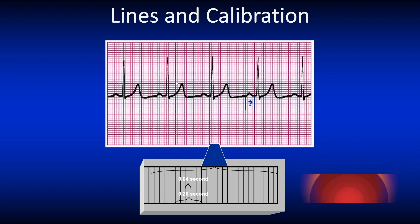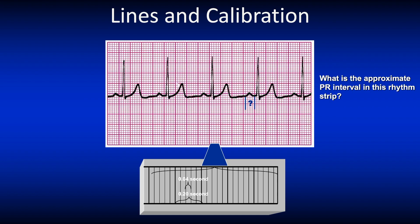Let's review what we call the PR interval, which we will discuss later in the session. Here we see four small boxes in a row, so we can say 4 times 4 equals 16, meaning 0.16 seconds.